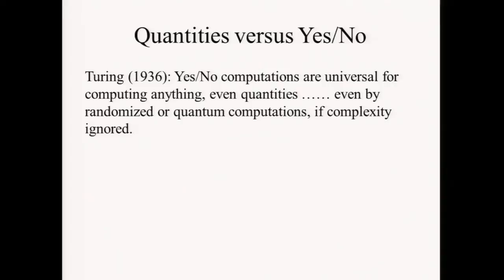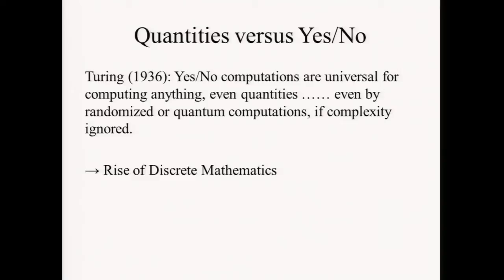Computer science has gone a very long way with just using yes/no criteria. With Turing's conception of computation, not only is the model of computation where everything is yes/no enough, but even considering the problems to be yes/no problems is very universal and good enough for computation. Besides the fact that we all carry around powerful Turing machines in our pockets now, another important consequence of Turing's work was the rise of discrete mathematics.